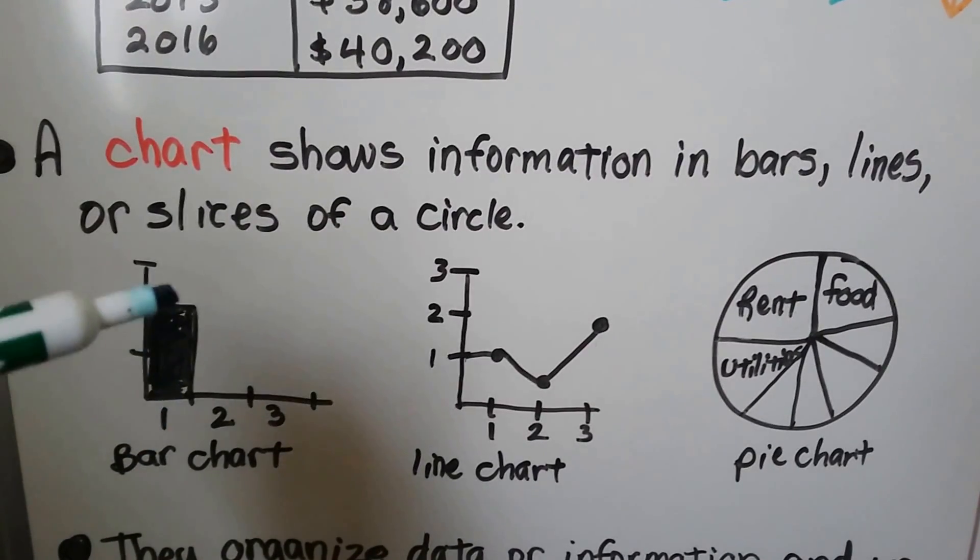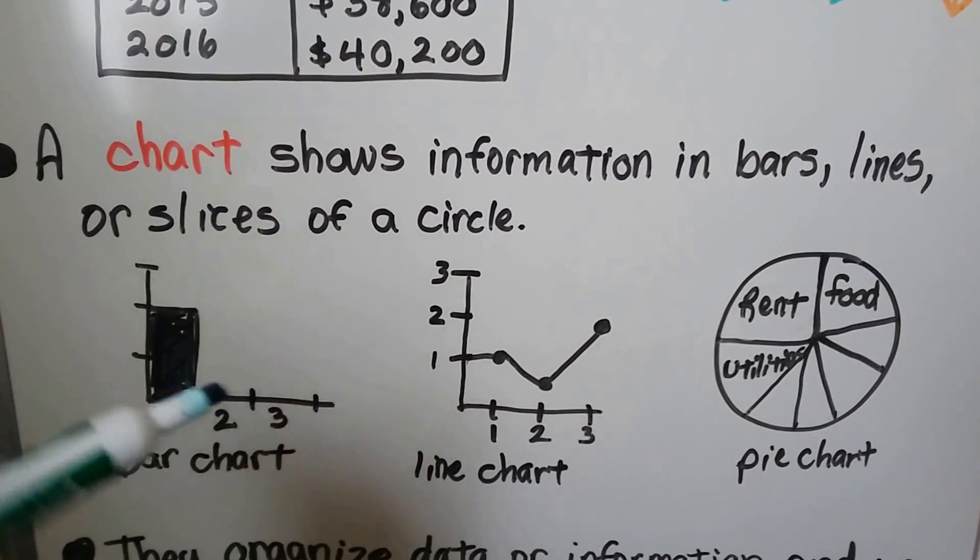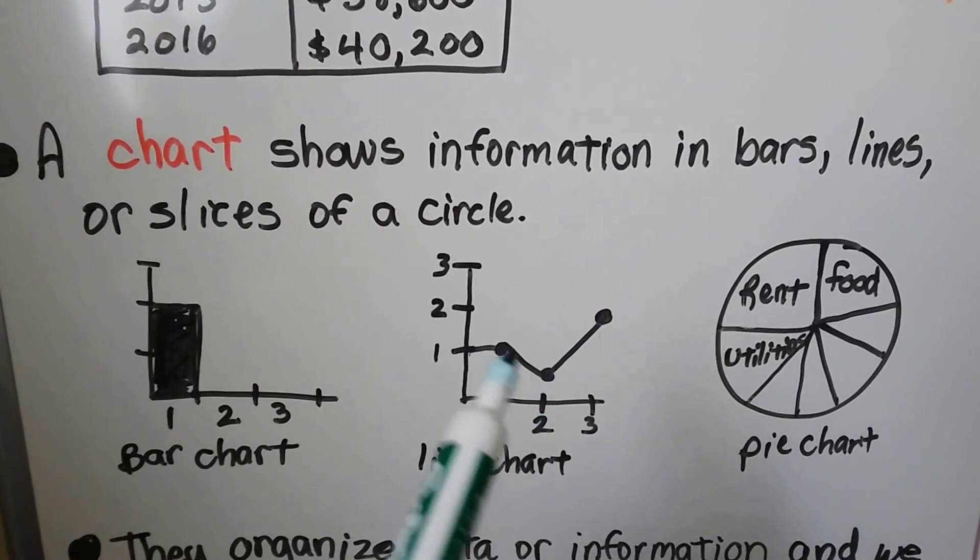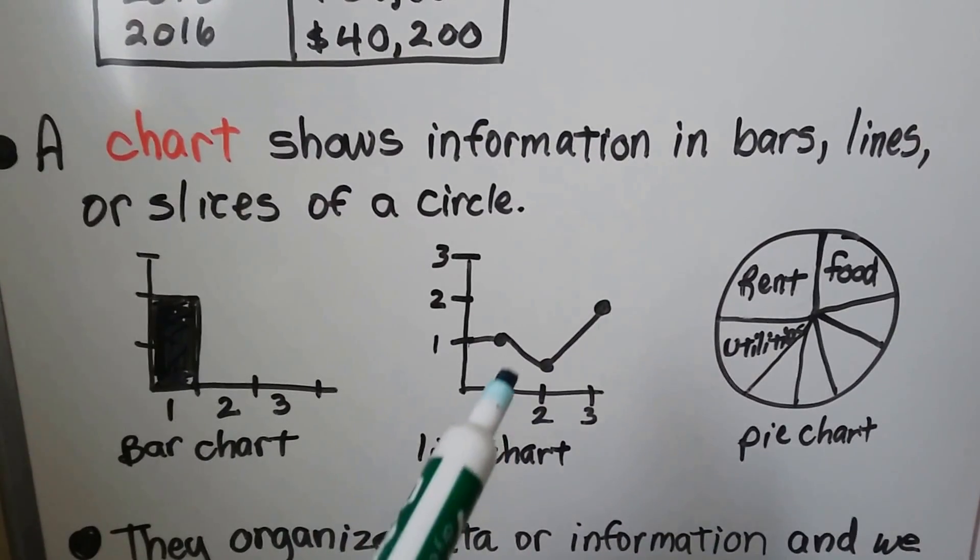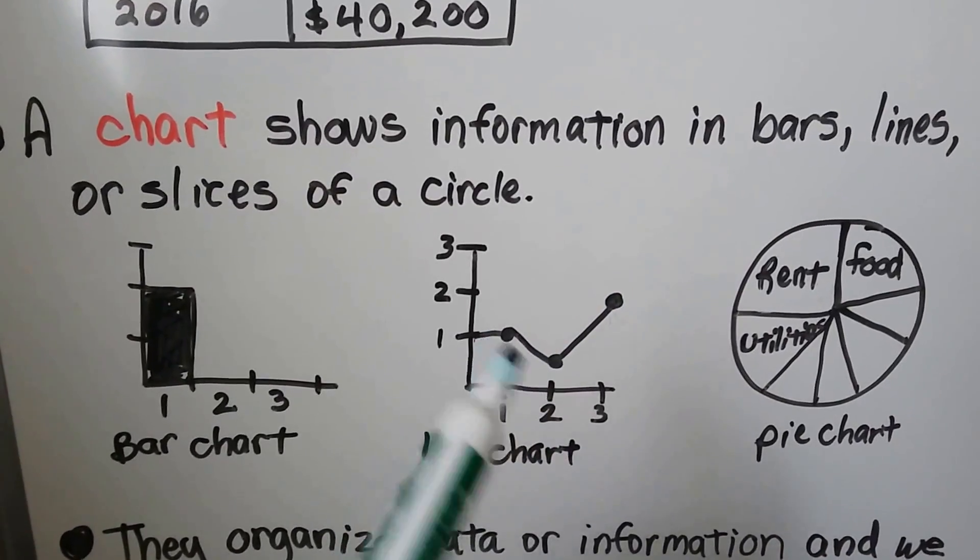The bar chart has bars that go up or show the values. A line chart has one line, or it could have two or three. I'll show you in the next video. Everywhere that there is a dot represents that data.